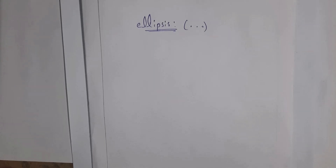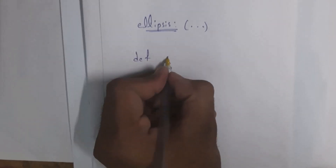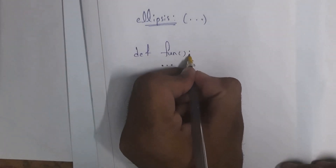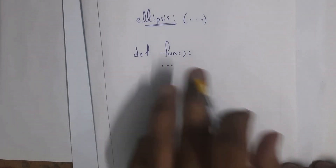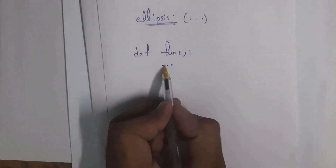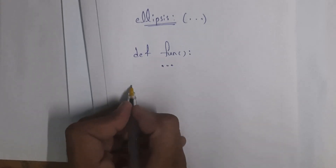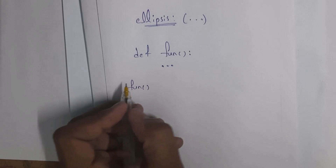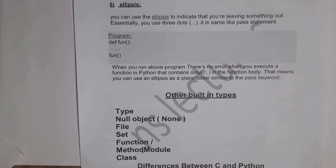The last internal type is ellipsis. Ellipsis is similar to the pass statement and is represented with three dots (...). If you don't want to write any statements inside a function, use three dots. For example, def fun(): ... When you call this function you get no output, because three dots mean nothing.